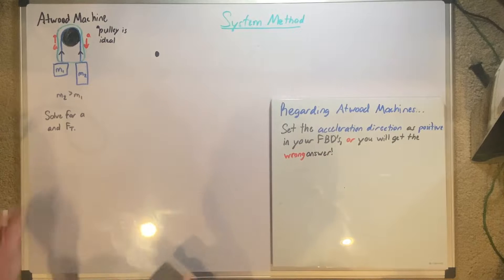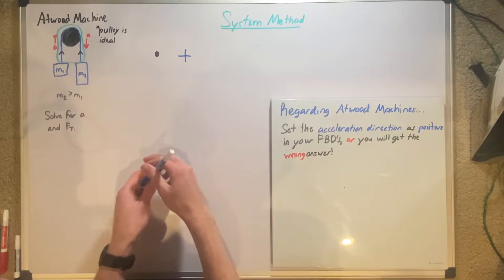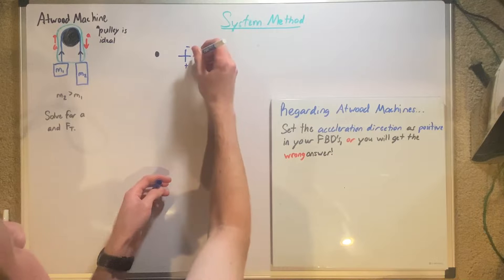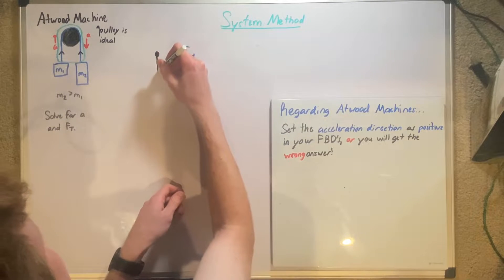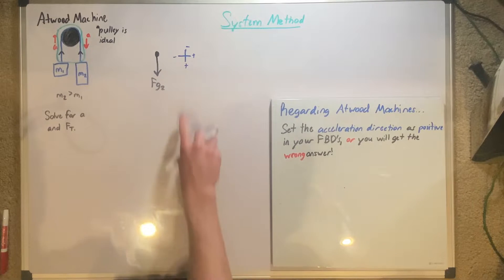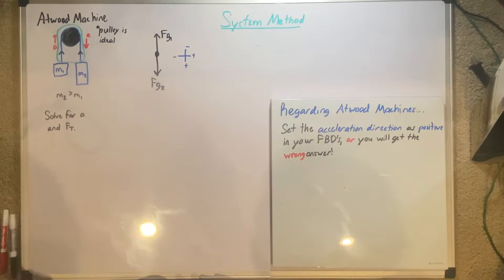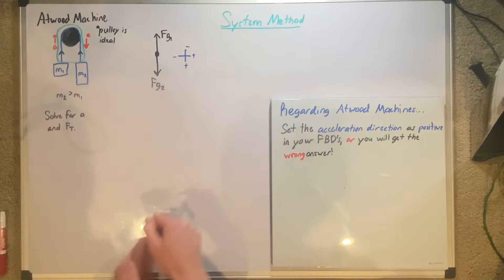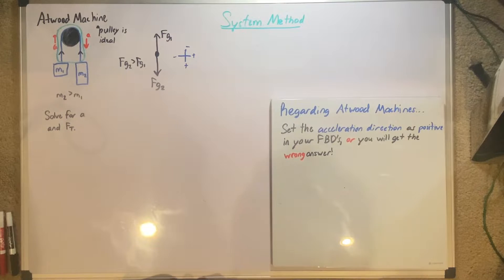What's left are the forces acting on either one of these two blocks. For our system, we need to define positive and negative before we do anything. Our positive is going to be downwards on M2 — so positive is down, negative is up. Now we know that the force going down is positive, and that's the force of gravity on M2. Our negative direction, which goes up, would be force of gravity on M1. Since mass 2 is greater than mass 1, force of gravity on 2 is greater than force of gravity on 1.